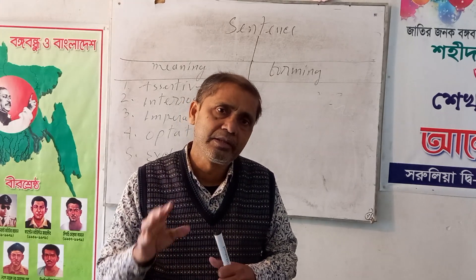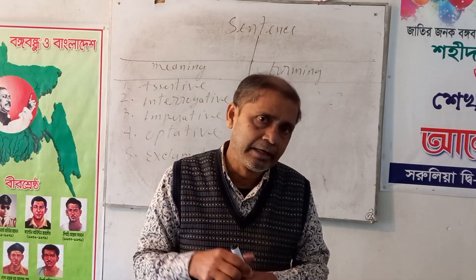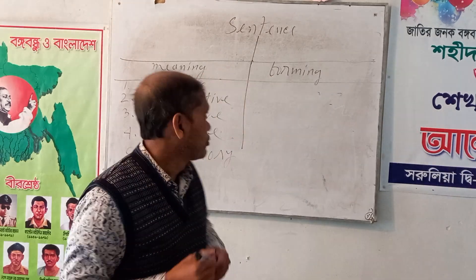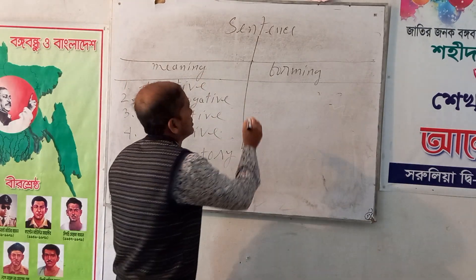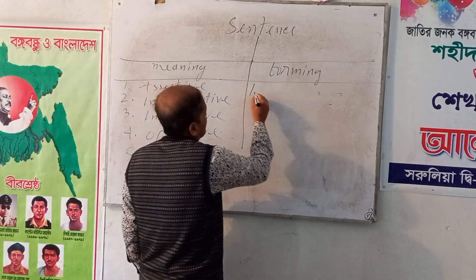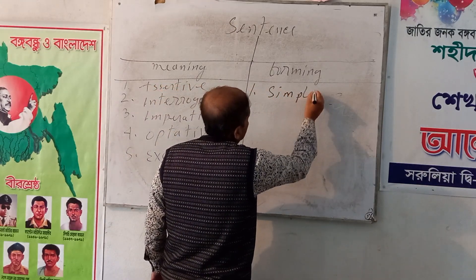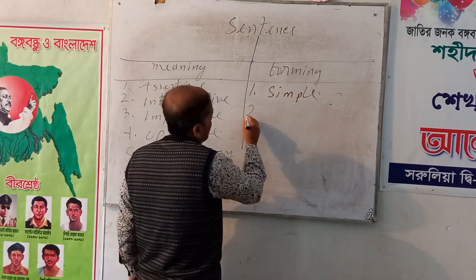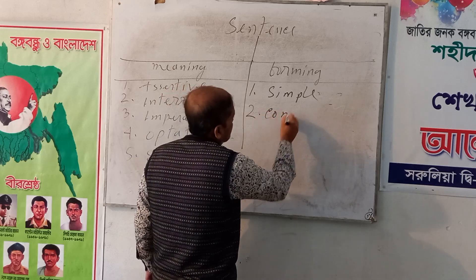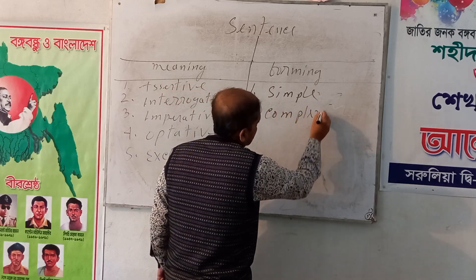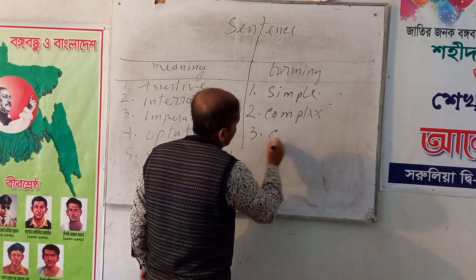There are also three kinds of sentences in English. From structure, sentences are three kinds: number one, simple; number two, complex; number three, compound.